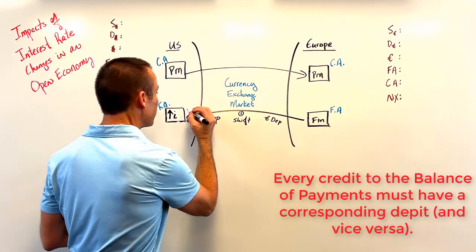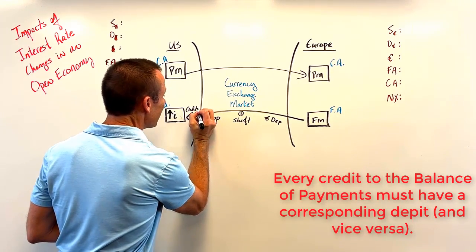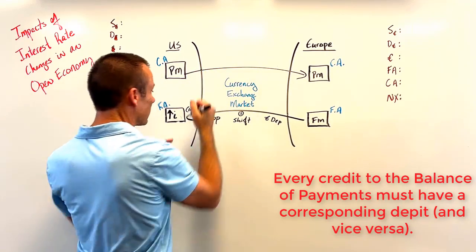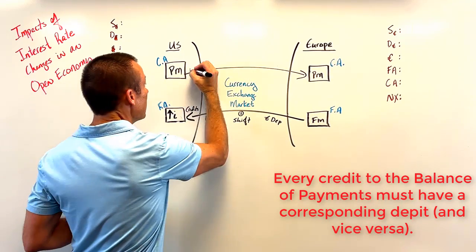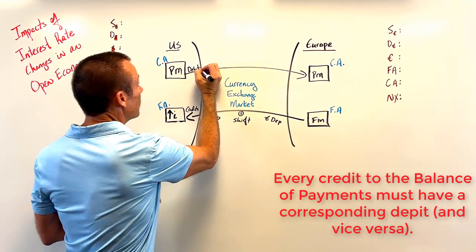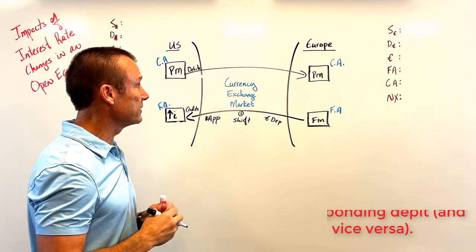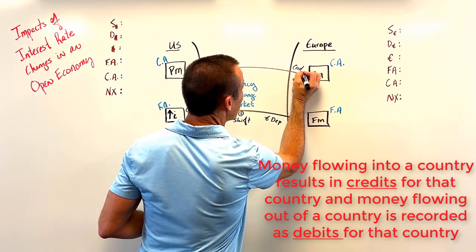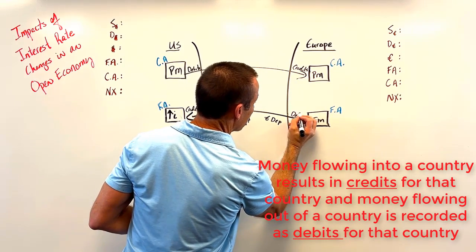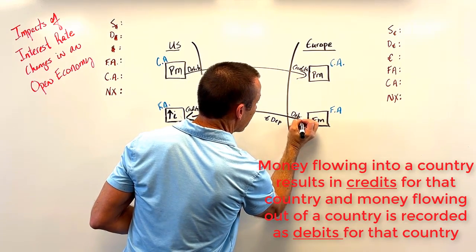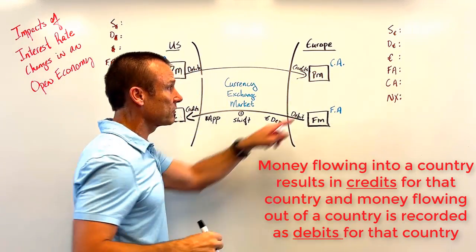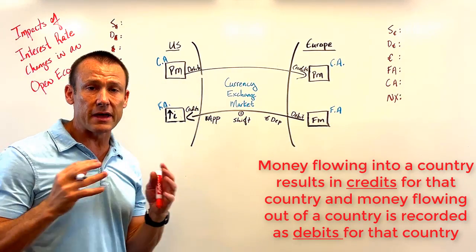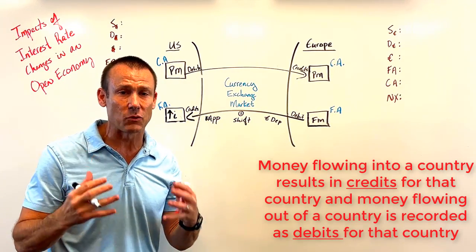As you get credits coming in to the United States financial account, you're going to get corresponding debits to the current account. Credits cause debits there. I've got the balance of payments: current account, financial account — current account, financial account. We're ready to answer pretty much every question we need to.